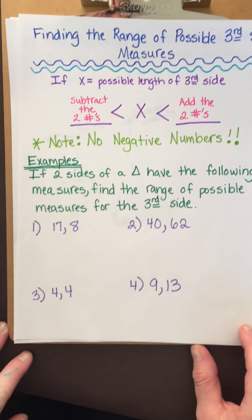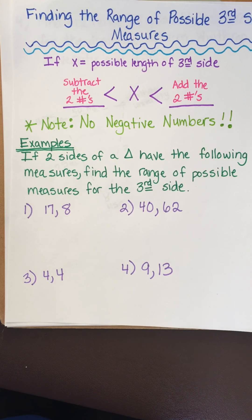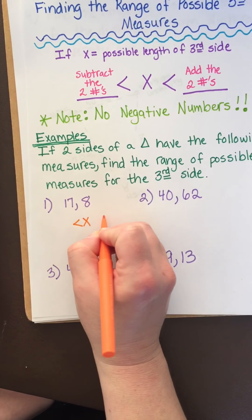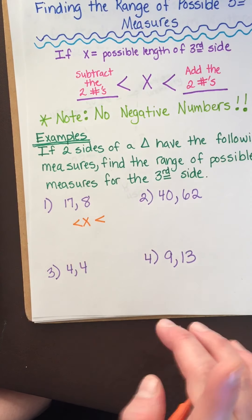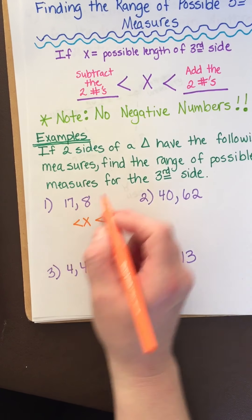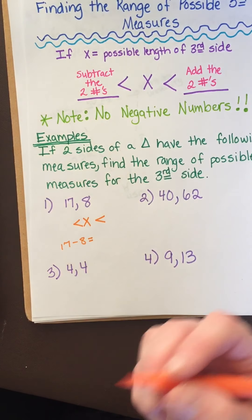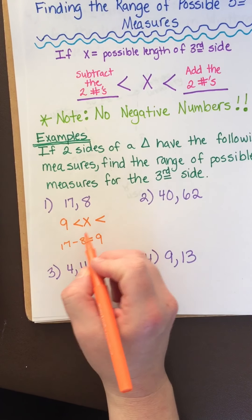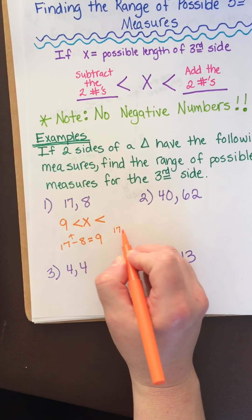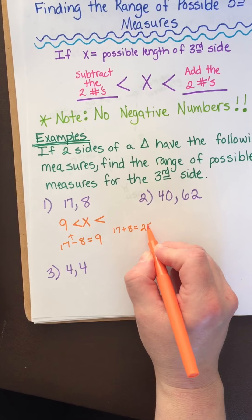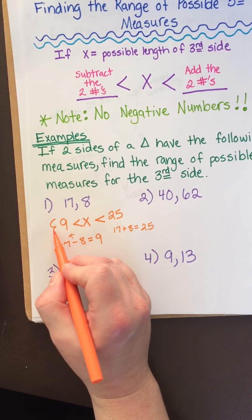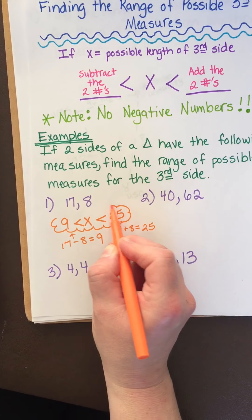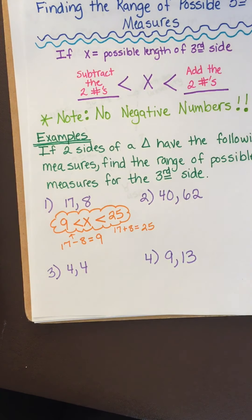So let's do this. It says, if two sides of a triangle have the following measures, find the range of possible measures for the third side. So when you do these, the first thing I would do is draw that compound inequality. Not the equal to parts because remember it can't be equal. So we subtract them. So 17 minus 8 is 9. So 9 goes here. And then you add them. 17 plus 8 equals 25. So 25 goes here. And boom, that's my answer. It could be any number between 9 and 25. For example, 9.2, 21.